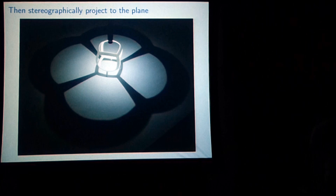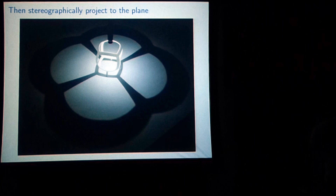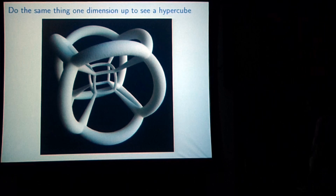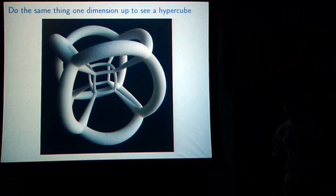The angles on the sphere are preserved on the plane. This is what happens when you do the same thing in four dimensions: going from the hypercube to the sphere in four-dimensional space, and then stereographically projecting to three-dimensional space. And again, all eight of the cubes are present here — none of them are crashing into each other, nothing overlapping.